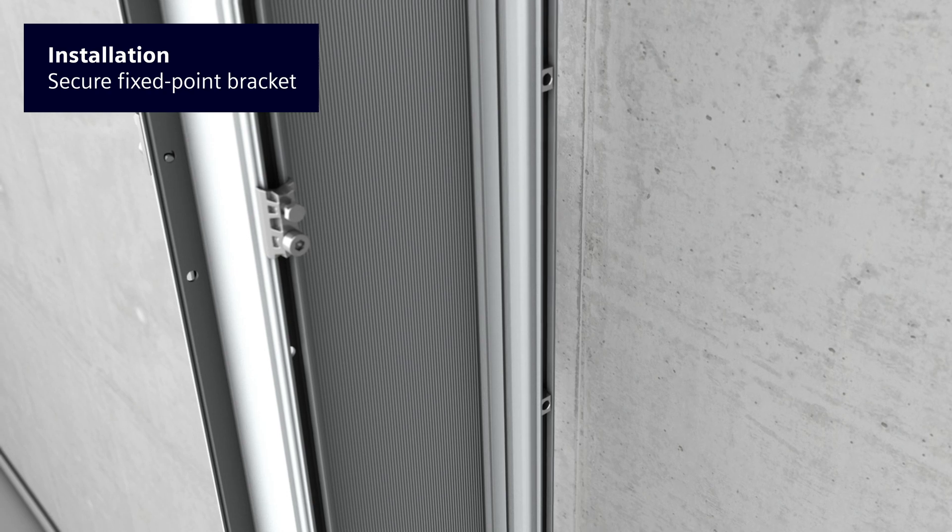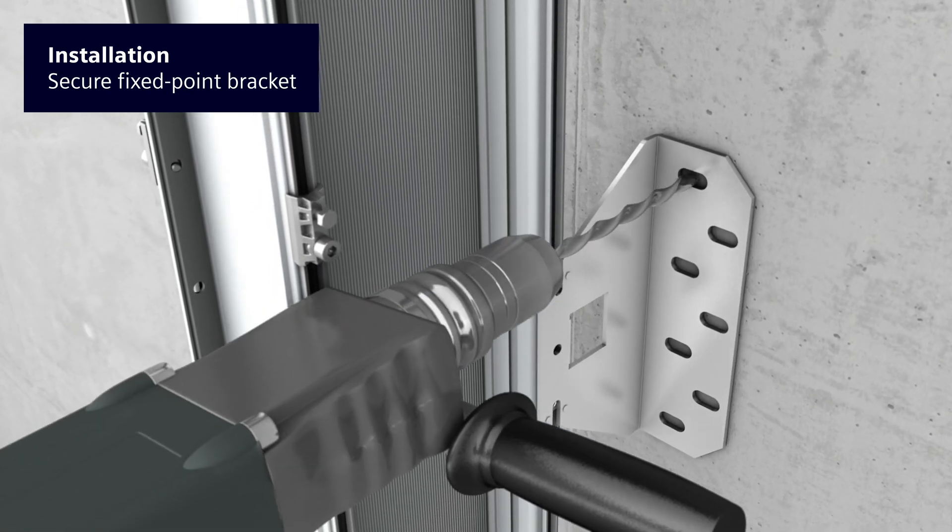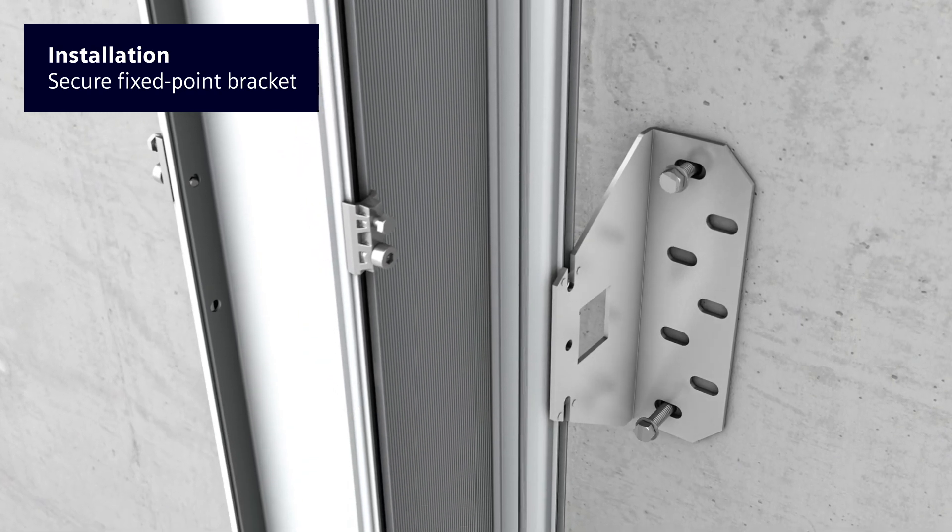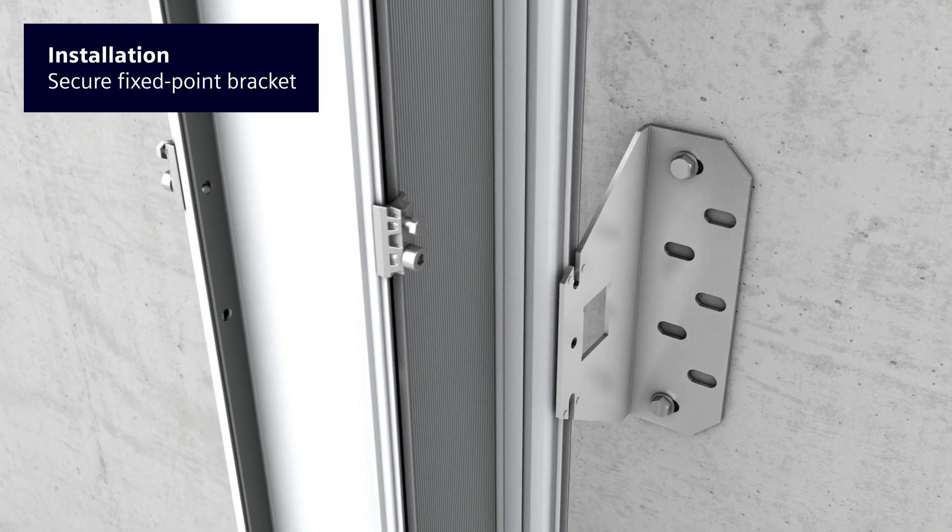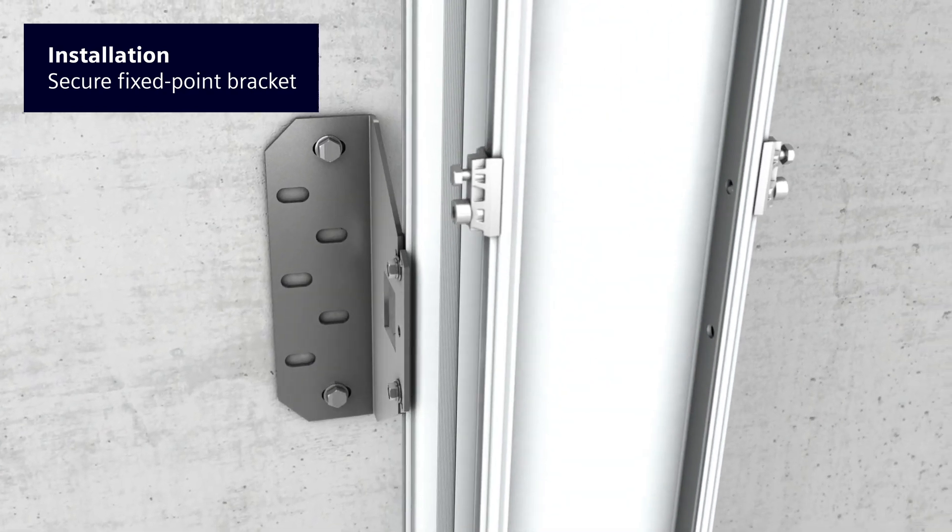The fixed point angle is an important retaining element in vertical installations. The fixed point angle serves as a template for drilling the fixing holes in the wall. Once the holes have been drilled, the fixed point angle is then screwed to the wall and to the trunking unit.